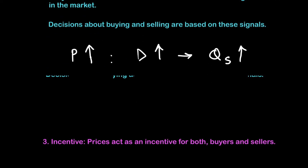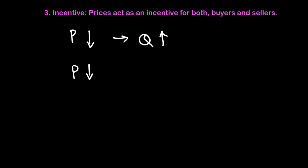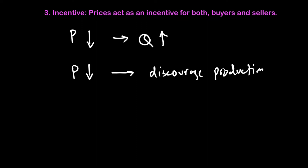The last function that prices play is that of an incentive — prices act as an incentive for both buyers and sellers. For buyers, when the price goes down, he knows he can buy more of this good, getting more value for any given level of satisfaction. When the price goes down from the producer's perspective, the lower price will discourage him from producing and could even drive him out of business if he finds there is no profitability. A lower price can discourage production and result in firms being driven out of business.